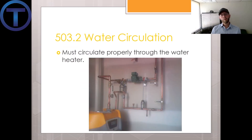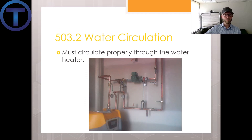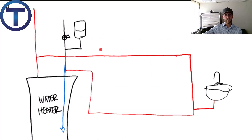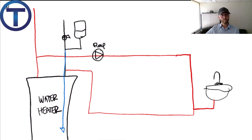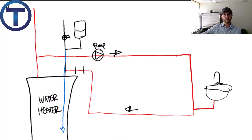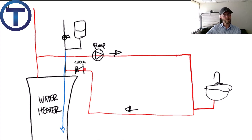503.2 talks about water circulation. Many times, in order to keep hot water out to the fixtures so you don't run water for a long time waiting for hot water to arrive, we recirculate it. You put a pump on there, it pushes that water around and keeps it warm out to the ends.